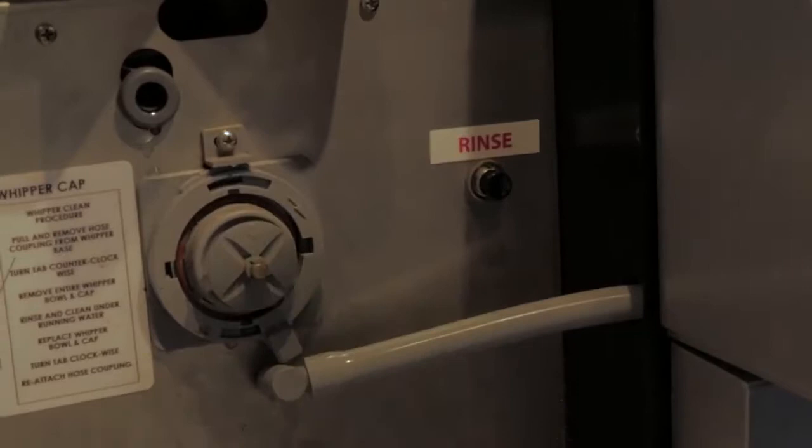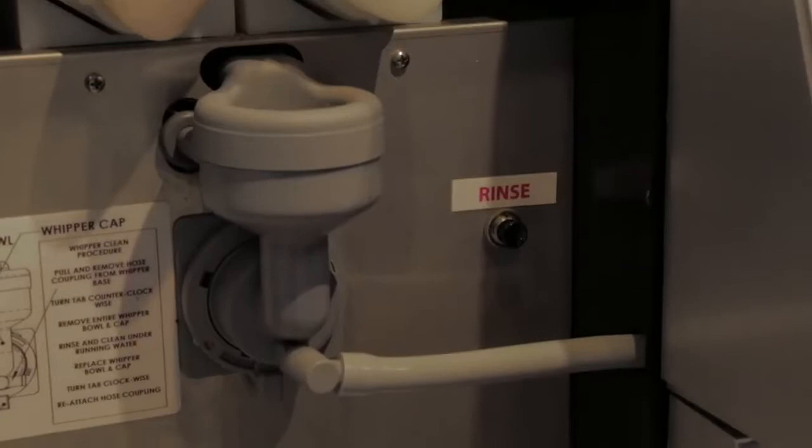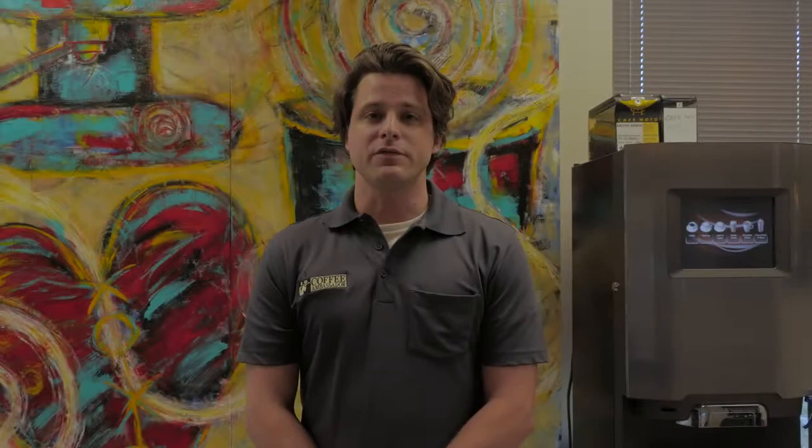You will then put the clean mixing bowl back in. You'll rotate clockwise to lock it back into position, and then you put the hose back as it is.